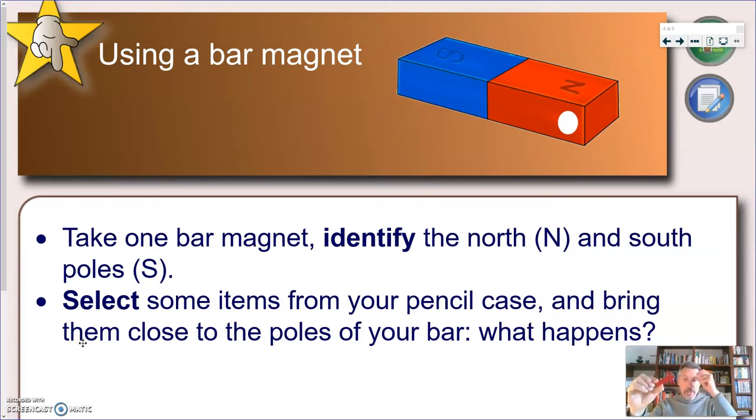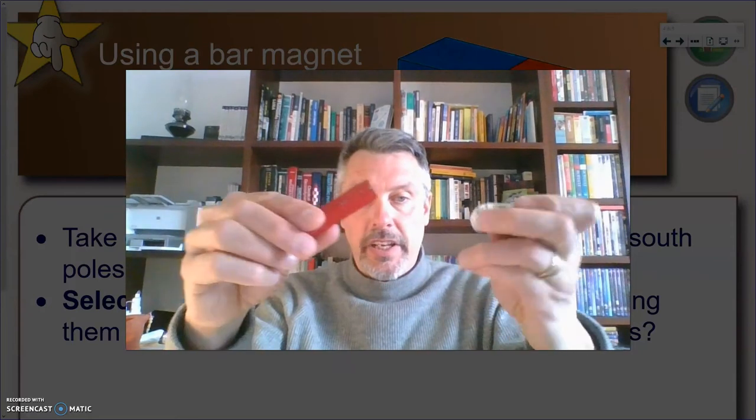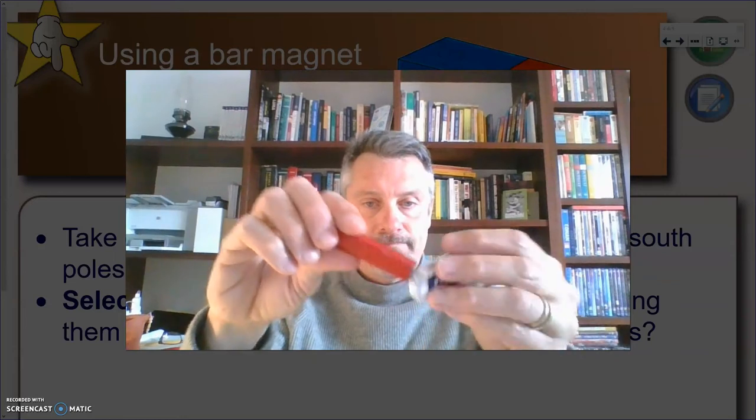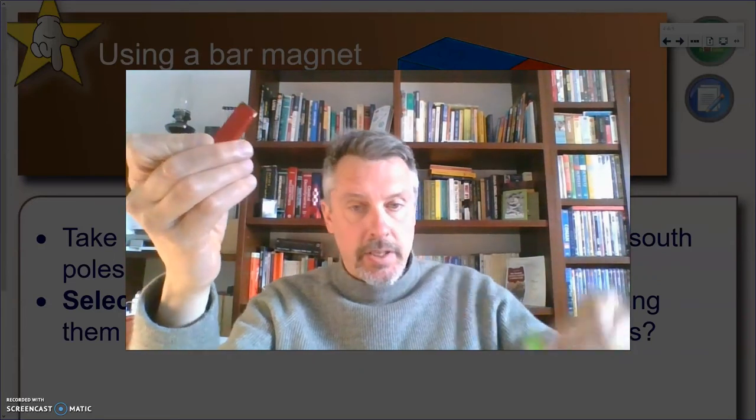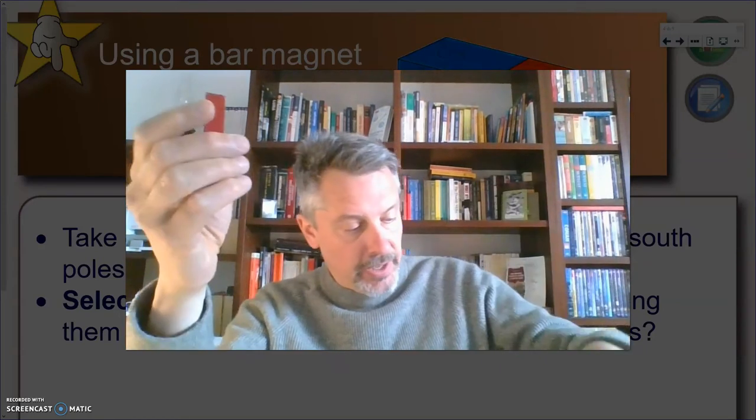And what I usually ask them is just to take their pencil case. So just this is my pencil case and not surprisingly, it has bicycles on it and just take some objects out of a pencil case and see what happens if you put the magnet next to them. For instance, if you take a rubber band and let me just make this bigger so you can see it better. So if I take a rubber band, sorry, an eraser, nothing happens.